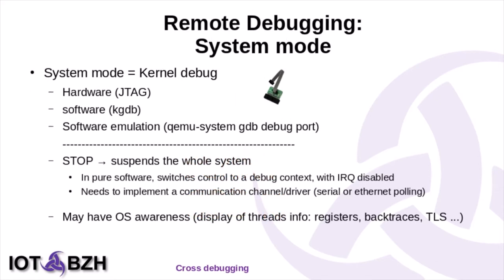There are two kinds of remote debugging: system mode and user mode. System mode basically means kernel debug under Linux. It can be performed either with hardware assistance with a JTAG probe, through software like KGDB, or software emulation — for instance, QEMU with a special debug port that emulates a GDB server. When you perform a stop, it suspends the whole system, so you lose communication. In the case of software like KGDB, you have to keep communication alive with IRQ disabled, using a special polling-based channel over serial or Ethernet.